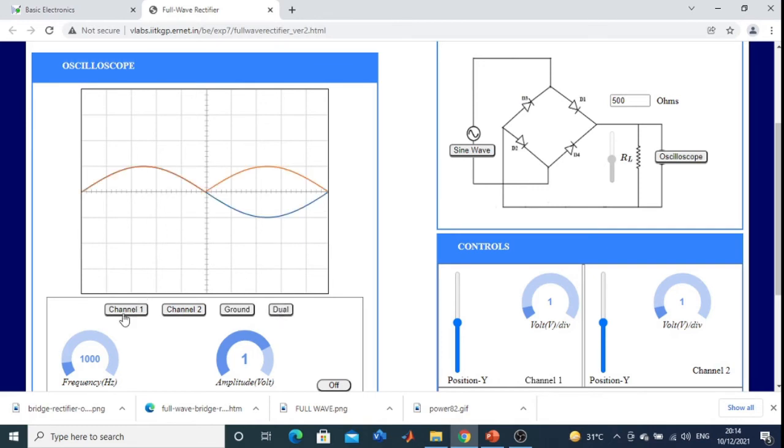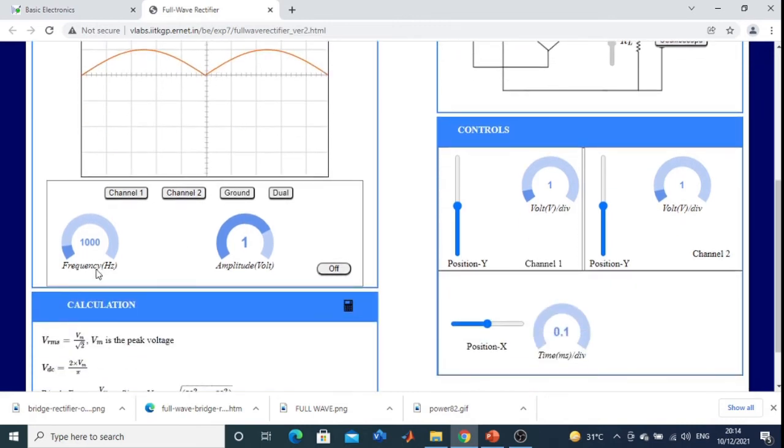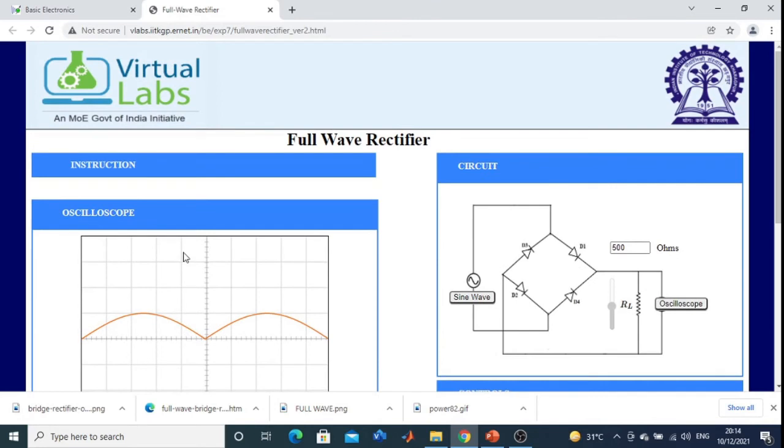If you will see the dual part, then dual. So here is the channel 1 and this is the output. Clear students. So you can vary the frequency, you can vary the amplitude, everything you can vary. So clear. Then we will go to the draw circuit.